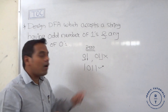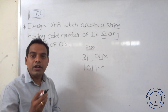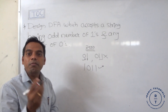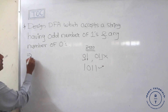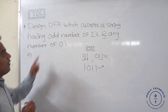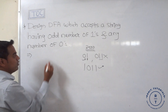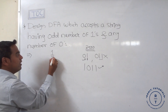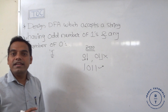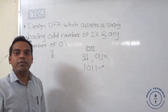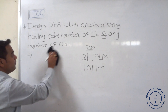Based on this, we first design the finite automata on the basis of the minimum string. The minimum string in the given problem having an odd number of ones is just '1', so that string is accepted by the finite automata.